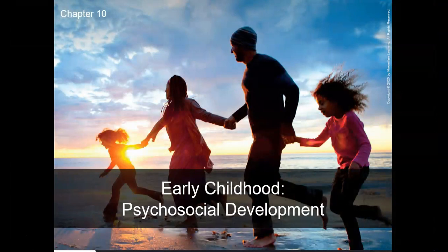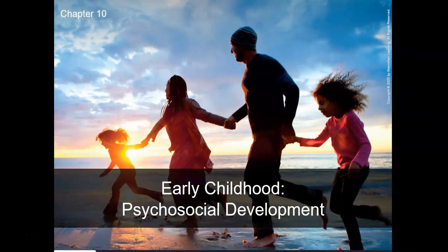I am going to dive right into chapter 10. So we're still talking about early childhood. We've gone through the biological and the cognitive — it's always the same three themes for all the chapters. For each span of life you will have biological aspects, cognitive aspects, and then psychosocial aspects. So we're rounding up this trinity of early childhood. We are in chapter 10: psychosocial development.